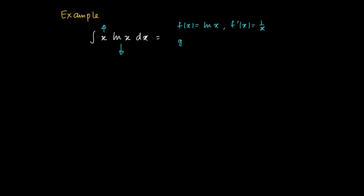Which is 1 over x. And g prime of x equals x, and this is the function we will take a primitive of. So the primitive of this function is given by a half times x squared.